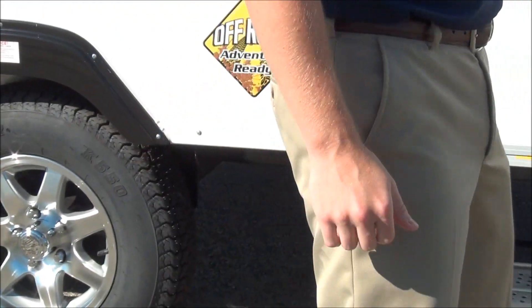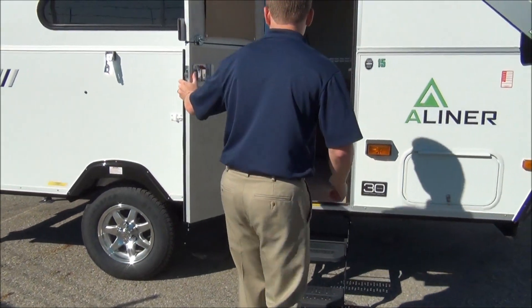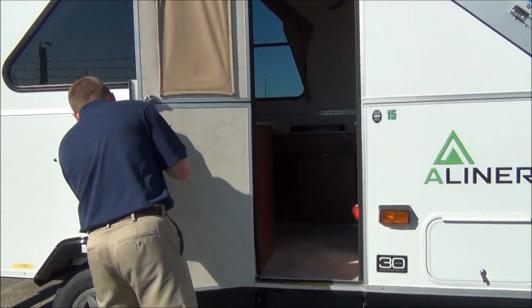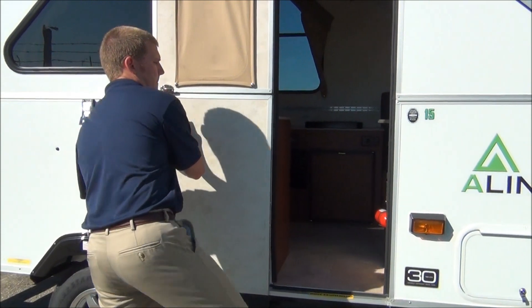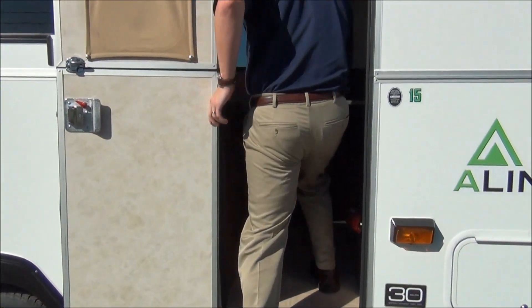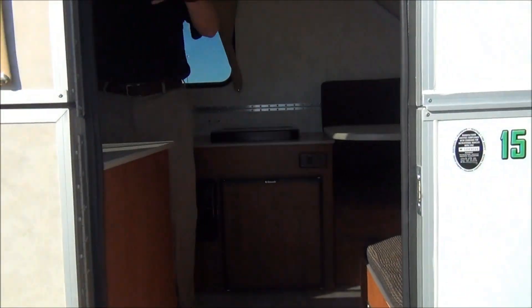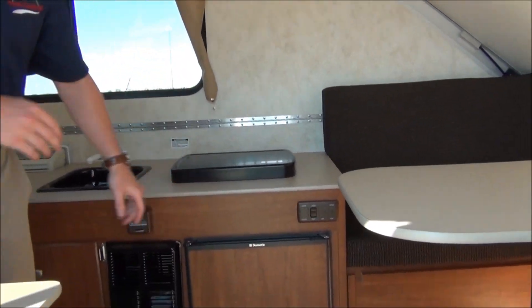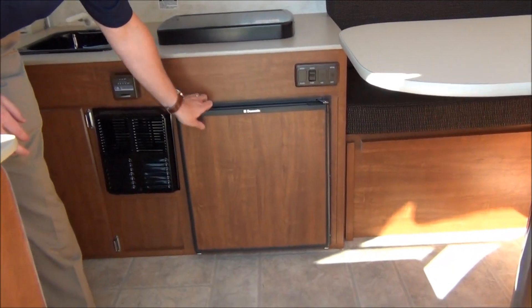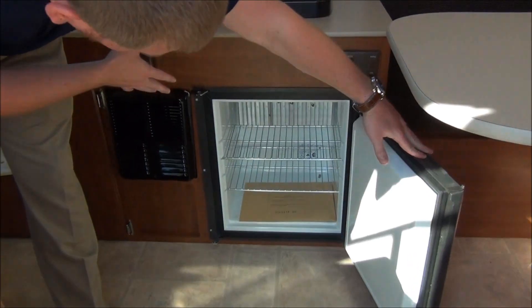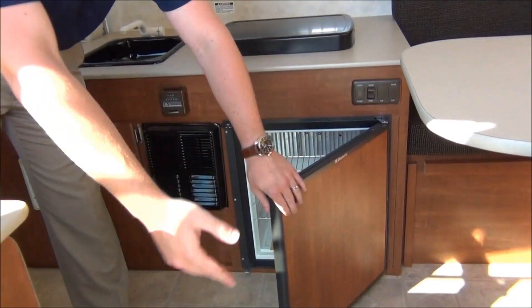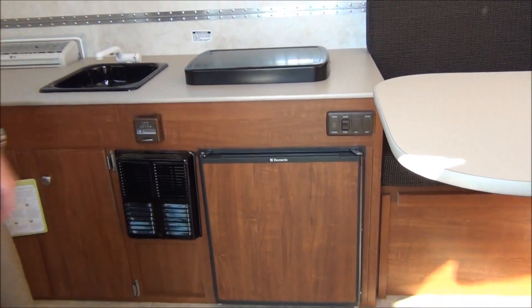Let's go ahead and come inside. We'll take a look at some of the stuff in here. Coming inside here, one of the first things you're going to notice is that this does have a refrigerator in here. This is a three-way refrigerator. It'll run on propane gas, 12 volts, and electric. So that's really nice to have here.